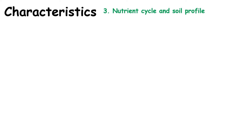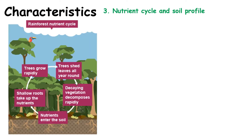Next we're going to look at the nutrient cycle and the soil profile. Trees are shedding their leaves all year round. They land on the forest floor and decay really, really rapidly — because it's hot, it's wet, and there's a huge amount of insects within the soil that help to break down the leaves.